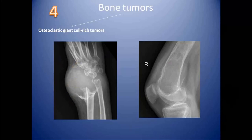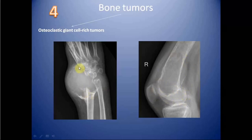There are four characteristic radiographic features of giant cell tumor. First, the patient has a closed growth plate — as we can see in this patient, the growth plate is closed. Second, the lesion abuts the articular surface — as seen here, it is abutting the articular surface. Third, it has a non-sclerotic rim — here you can see there is no sclerosis in the rim. Fourth, the lesion is eccentric and expansile.